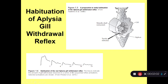But what if the stimulation is not noxious, not threatening, not dangerous? What if the gill and mantle are just experiencing water currents from being buffeted by the surf? Then you don't want to withdraw the gill. So the Aplysia has developed habituation of the gill withdrawal reflex. With repeated mild stimulation of the mantle and gill, the gill withdrawal reflex will get less and less, and the Aplysia will habituate its gill withdrawal reflex.